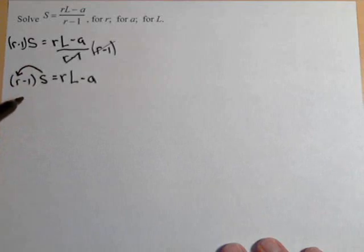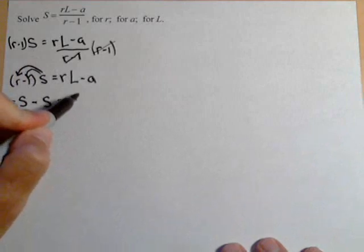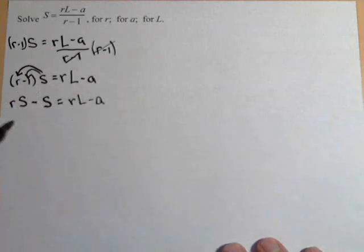So first, we'll get R times S, and then S times one is just S, but it's negative, so it's minus S equals RL minus A. We might be able to use some of this work in these other problems.